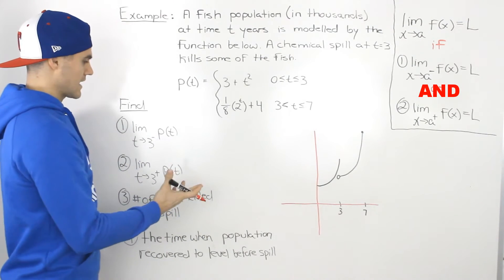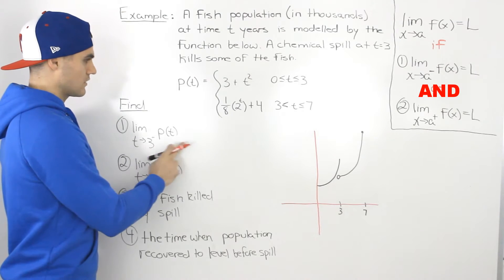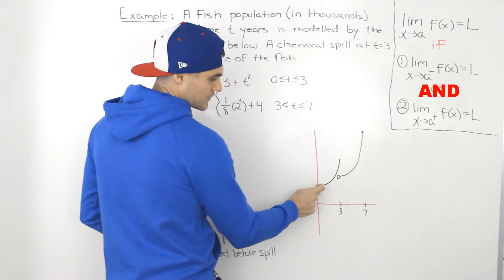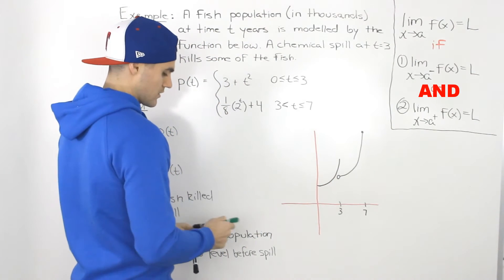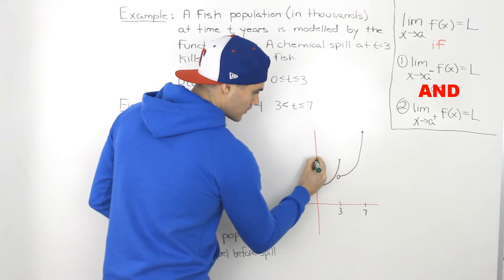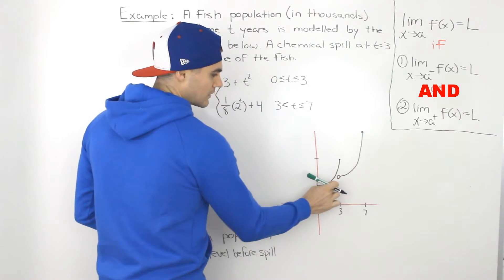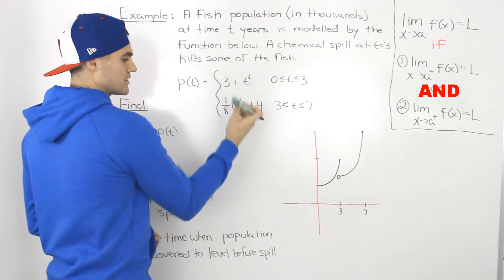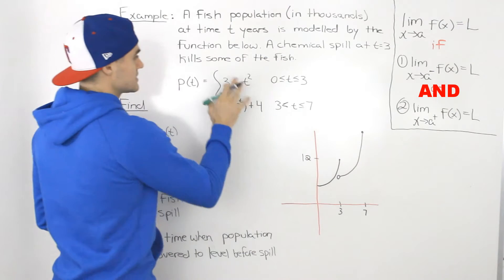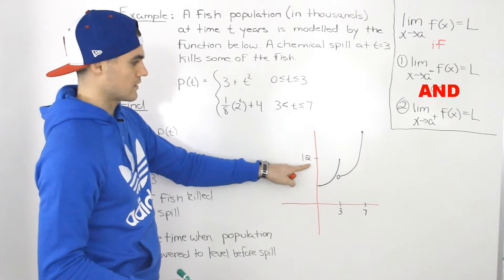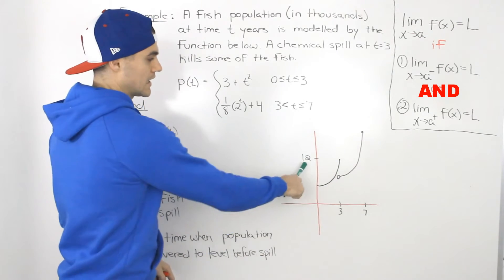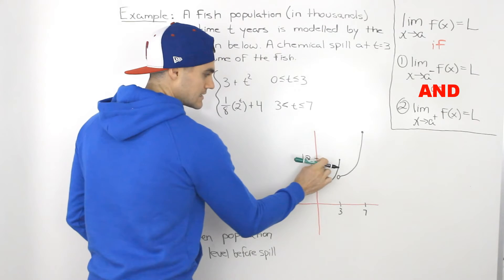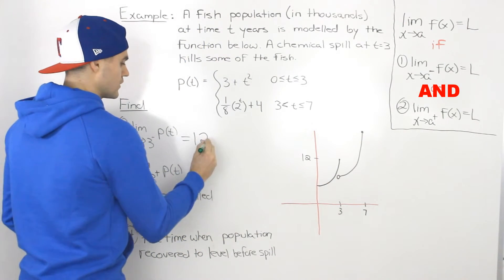Now let's answer the questions. The limit as t approaches 3 from the negative side: as we approach 3 from the left, we're going up the curve 3 plus t squared. To find the y-value we approach, we plug 3 into this function: 3 squared is 9, plus 3 gives 12. Since the population is in thousands, the fish population just before the spill is 12,000. So the left-sided limit equals 12.